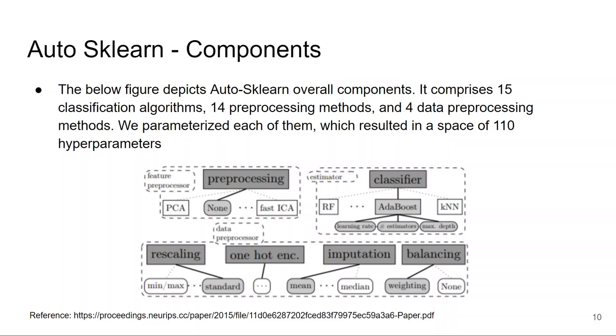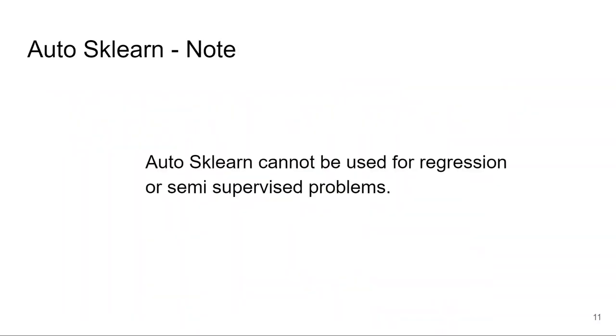If you want to see all the algorithms and preprocessing methods that they are using, please do check out their paper. I want to mention one point here: Auto-sklearn cannot be used for regression or semi-supervised problems. Currently, it only supports classification problems. In the future, they might release a new version which supports regression and semi-supervised problems as well.